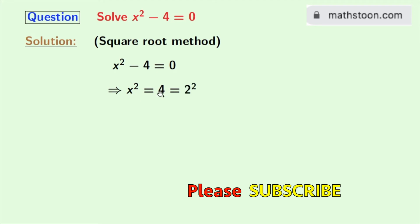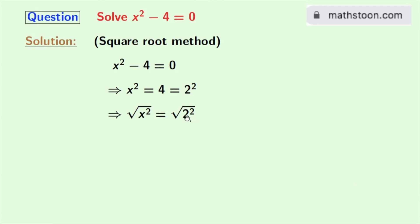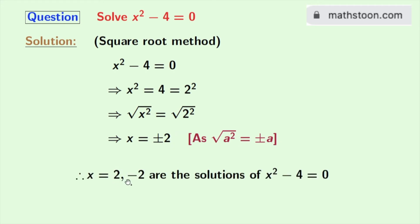4 can be written as 2 squared. Now taking square root on both sides, we get square root of x squared is equal to square root of 2 squared. From this we get x is equal to plus or minus 2. As we know that square root of a squared is equal to plus or minus a. Here a is 2. So 2 and minus 2 are the solutions of the given equation.